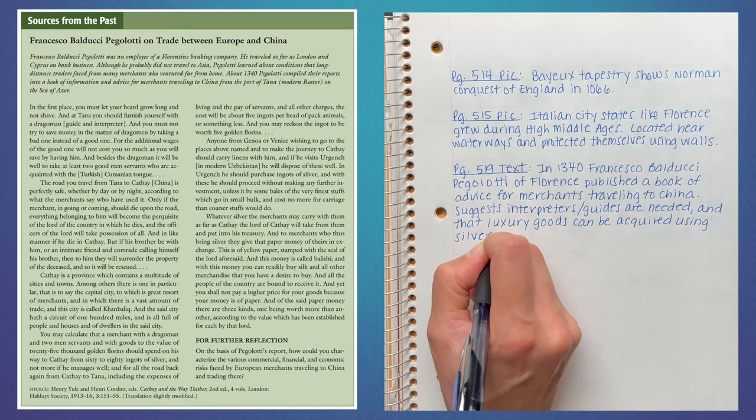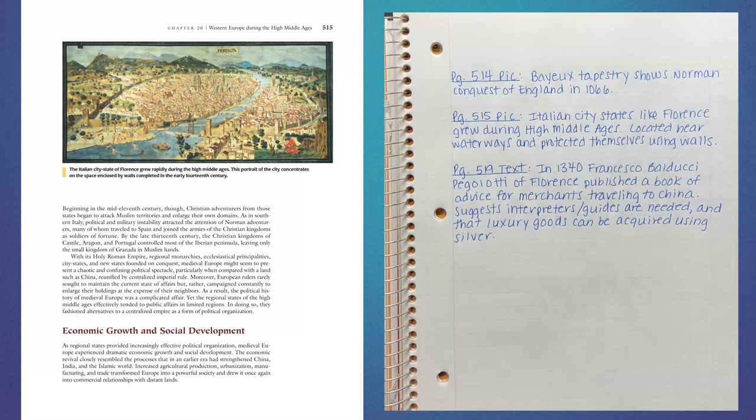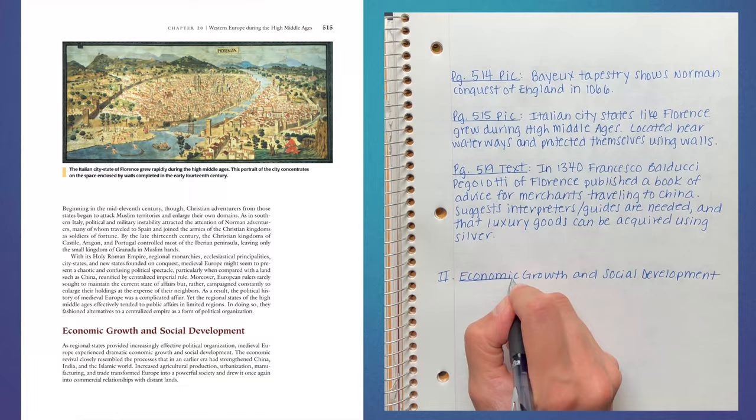Let's get back to the main text and wrap up this tutorial. We decided earlier that red sections would be assigned Roman numerals in our outline. Therefore, we will skip a line, write Roman numeral 2, and write Economic Growth and Social Development. From here, you can repeat the same process we have used for the previous section. In the description below, you will find a link to a PDF of the textbook selections used for this tutorial, as well as a PDF scan of my corresponding outline. I would review these and get as comfortable as you can with the formatting. Thanks for watching, and good luck with your studies.